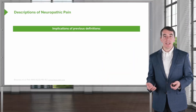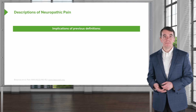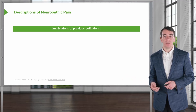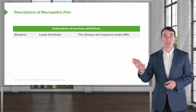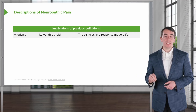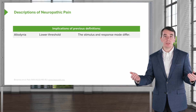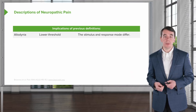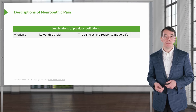Let's dive into each of these terms in greater detail. First, allodynia: here we see nociceptors — those painful sensing nerves — fire at a lower threshold. The stimulus and response mode differ, so patients describe pain with a non-painful stimulus.